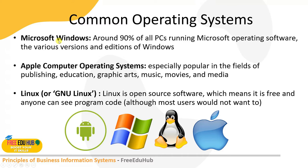There are different common operating systems from Microsoft, Apple, and Linux. Microsoft is a paid software; Apple is also a paid operating system and usually comes with the hardware. Linux is available both free and at a paid level. About 90% of all PCs running worldwide use Microsoft operating systems in various versions and editions of Windows. Since it is the most widely used, most application softwares available in the market are focused on Windows, making for a large market.